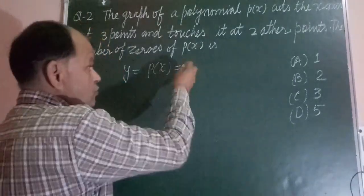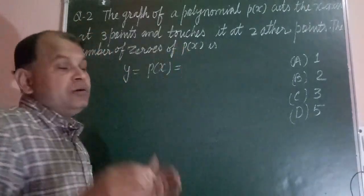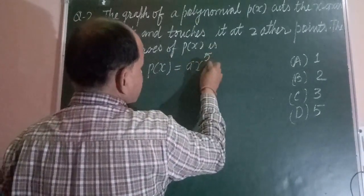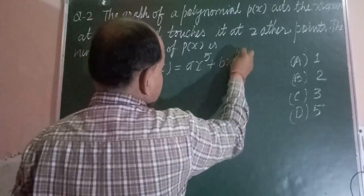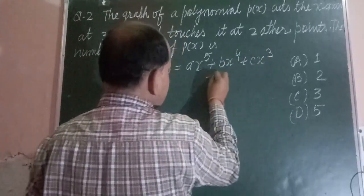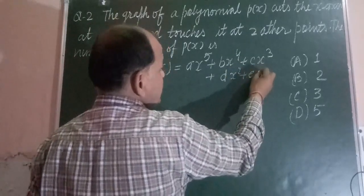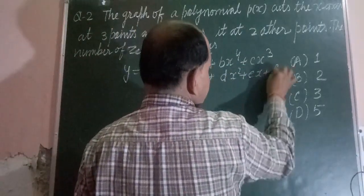So this is a polynomial of degree 5: ax^5 + bx^4 + cx^3 + dx^2 + ex + f.